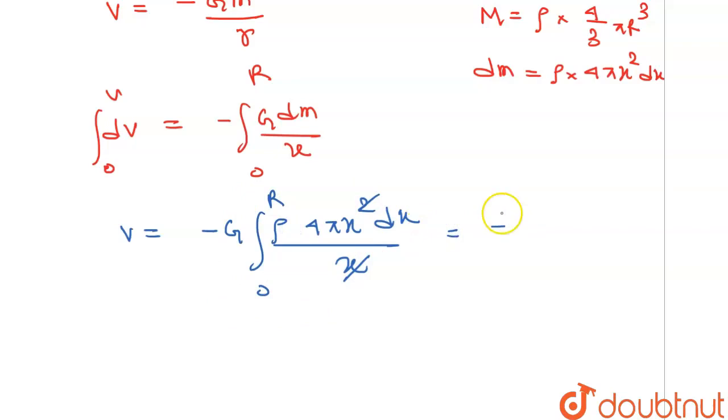We will get negative of G rho 4 pi will come out of integration x dx, 0 to r. V will be equals to negative of G into rho into 4 pi.